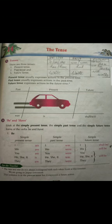The first example is WE ARE LATE. This is a simple present tense. If you have to convert it into simple past tense, your answer becomes WE WERE LATE. And the same sentence in simple future tense becomes WE WILL BE LATE or WE SHALL BE LATE.